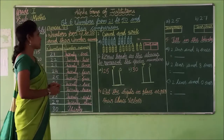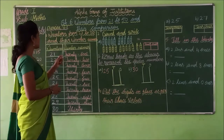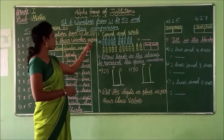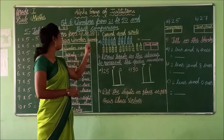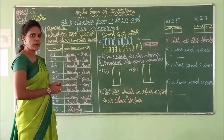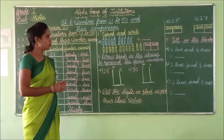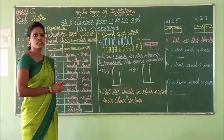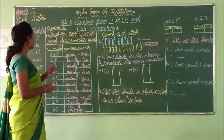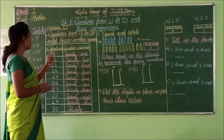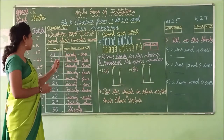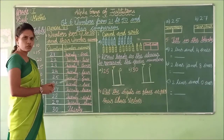Now we move on to the chapter. Today we are going to see a new chapter. Chapter: Numbers from 21 to 50 and their comparison. We have seen numbers up to 20. Now we are going to see numbers 21 to 50. This is Exercise 6.1: Numbers from 21 to 30 and their number names.